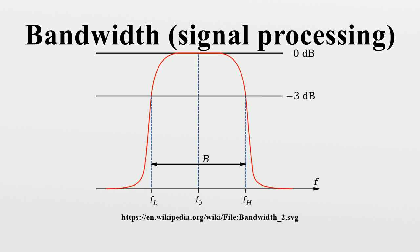In some contexts, the signal bandwidth in Hz refers to the frequency range in which the signal's spectral density is non-zero or above a small threshold value. That definition is used in calculations of the lowest sampling rate that will satisfy the sampling theorem. The threshold value is often defined relative to the maximum value, and is most commonly the 3 dB point.